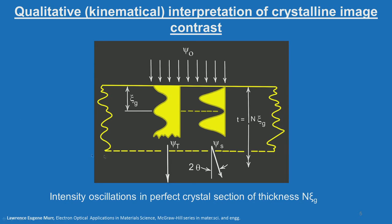The schematic shows a thin specimen of thickness T with an incident beam ψ₀ entering the specimen. From the diffraction phenomenon, the beam enters the specimen, interacts with it, and some beams are diffracted. The intensity of both the transmitted beam and the diffracted beam oscillate as the beam penetrates deeper into the crystal — the transmitted intensity follows one oscillation and the diffracted intensity follows the complementary oscillation.